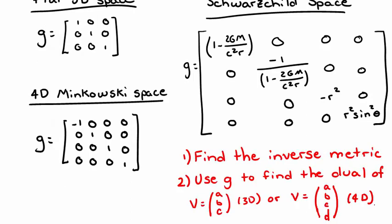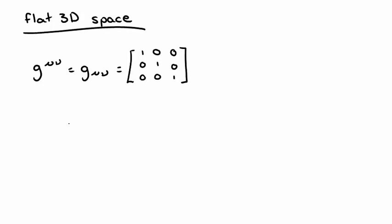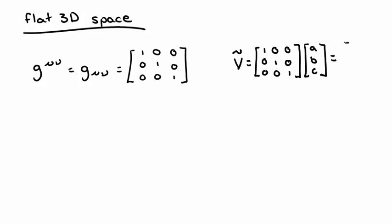For each metric, pause the video and do the following: first, find the inverse of each metric, g upper mu nu; and second, use the metric to act on a vector v and find its dual, v twiddles. For 3D space, use the three-component vector abc. For Minkowski and Schwarzschild space, use the four-component vector abcd. In flat 3D space, we find that the inverse metric is the same as the metric — ones down the diagonal and zeros everywhere else. The dual vector, similarly, is the metric contracted with the original vector v, so v twiddles also equals abc.